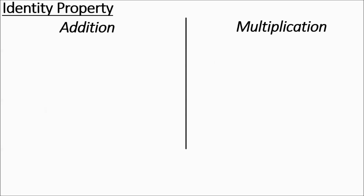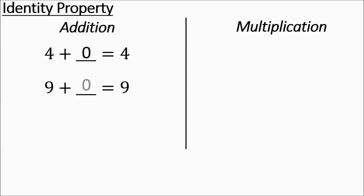We're going to talk about adding and multiplying. So basically 4 plus something is 4 — that mystery number would be a zero. Then we have 9 plus something equaling 9 — that mystery number is going to be zero again. And then we have 2 fifths plus some number equaling 2 fifths — it's still going to be zero.